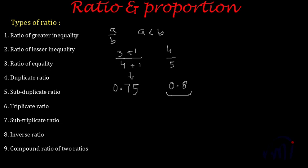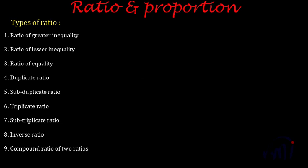What happens if I subtract? If I subtract 1 from both 3 and 4, I get the ratio 2 by 3, which equals 0.66 repeating. This is less than 0.75, so if you subtract a constant from both terms of a ratio of lesser inequality, the value of the ratio decreases.